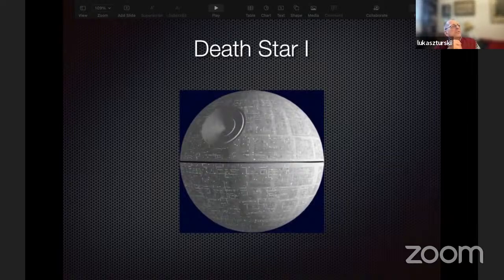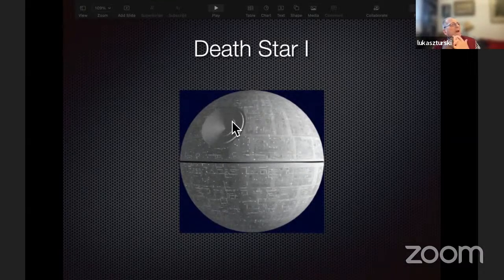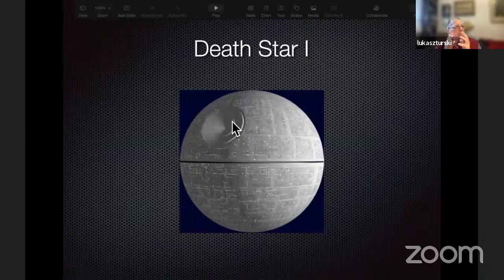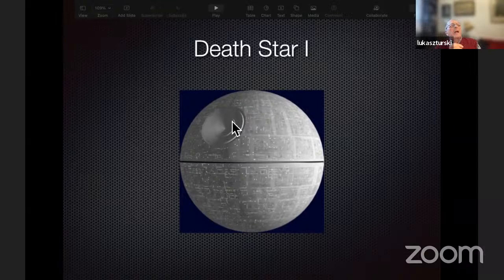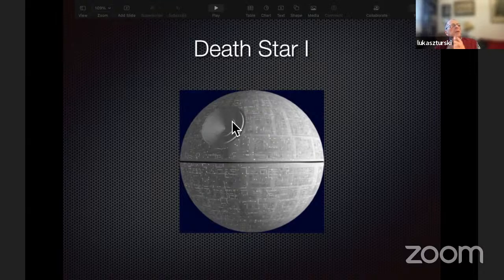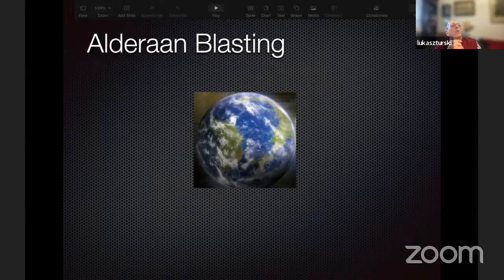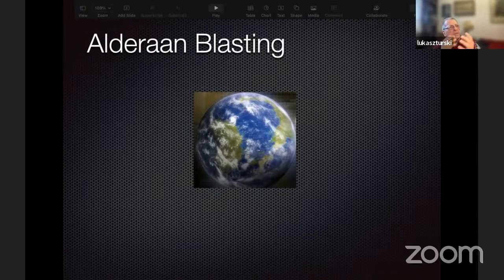Later on it appears there is also a Death Star 2, but let's concentrate on Death Star 1. This is a huge artificial satellite which is a weapon. This circle is a kind of electromagnetic energy. In the film it is a laser gun which is a planet destroyer.